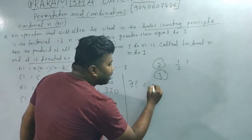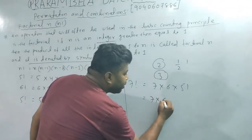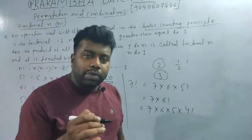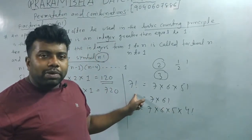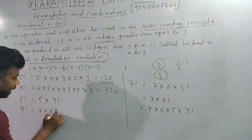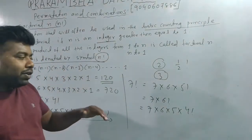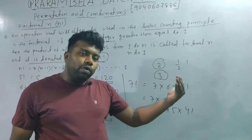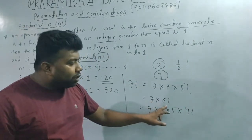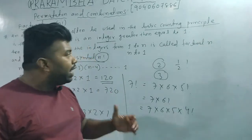For 7 factorial: 7 × 6 × 5 × 4 × 3 × 2 × 1. So the factorial concept means n factorial is an operation that will often be used in the basic counting principle. This is the factorial concept.